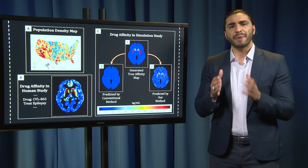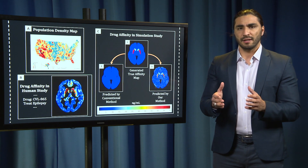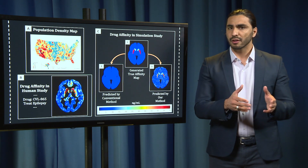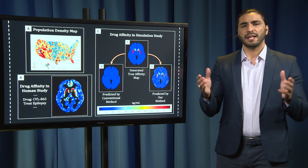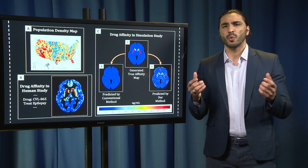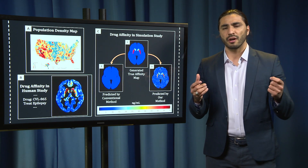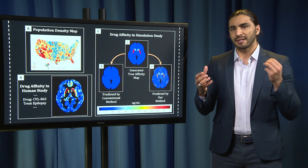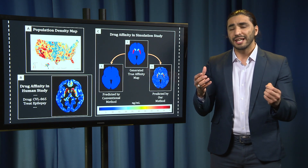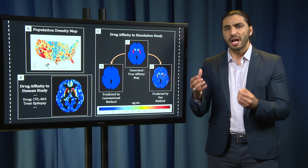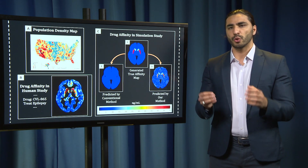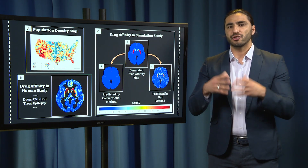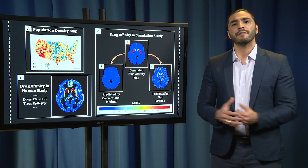Drug doses are based on an estimate of affinity, which is how strongly the drug binds to the target receptor. Think of affinity as a lock and key mechanism, where the key is the drug and the lock is the receptor. Just as an appropriate key would unlock the door, a drug with the right affinity would bind tightly to the target receptor and generate a strong therapeutic effect.